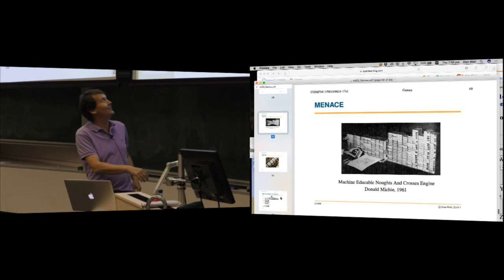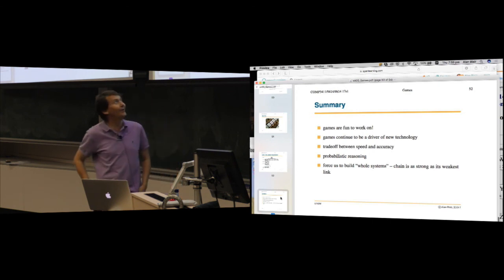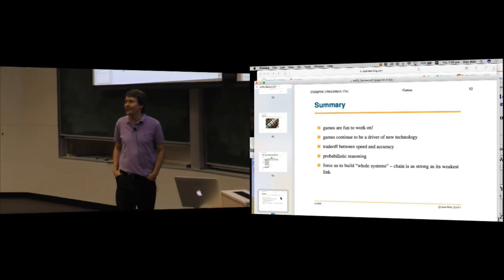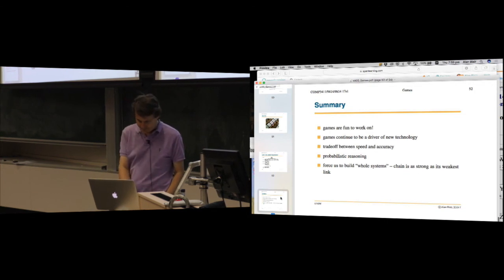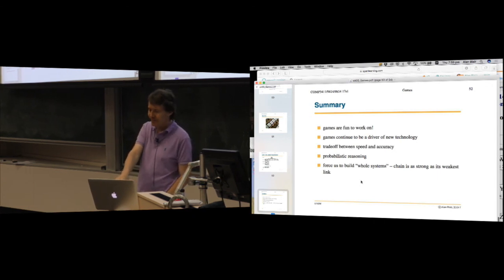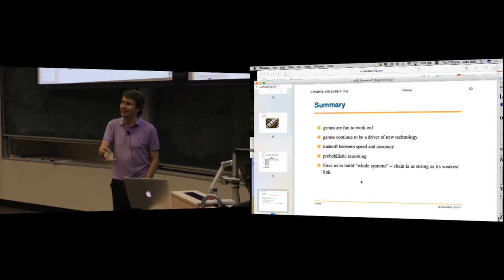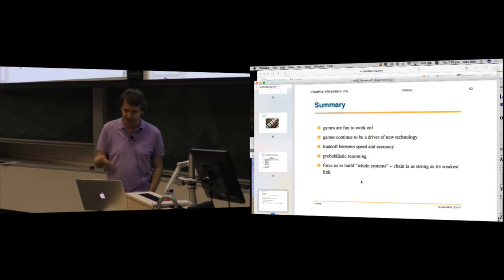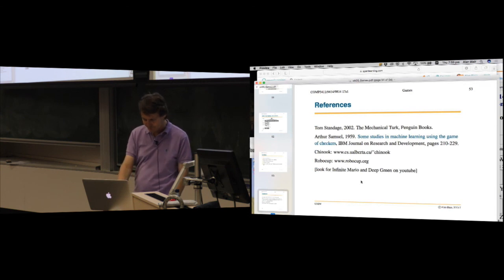But you see how many matchboxes he needed just to play tic-tac-toe. So summary: games are fun to work on, they continue to be a driver of new technology. There's a trade-off between speed and accuracy. Some games also require probabilistic reasoning. And the other thing, and you see this particularly in things like RoboCup, it forces you to build a whole system. The chain is as strong as its weakest link. So when you go to these RoboCup competitions, you might have the best strategy code in the world, but if there's a bug in your vision code and you can't see the ball because of the lighting conditions, then you're going to catastrophically fail. So it's kind of good in a way that it forces people to build whole systems.